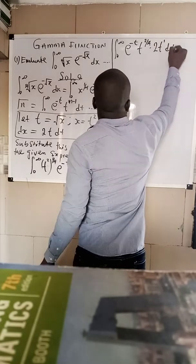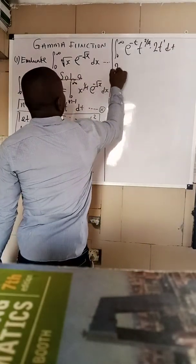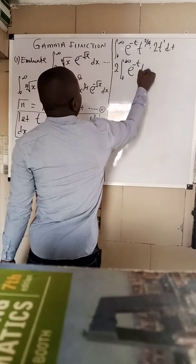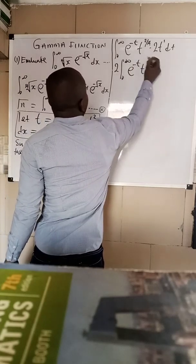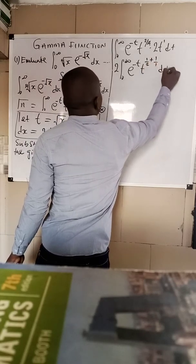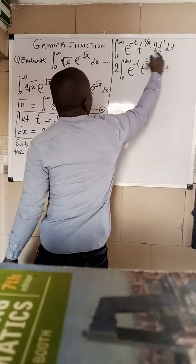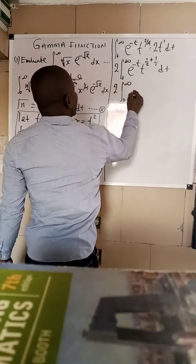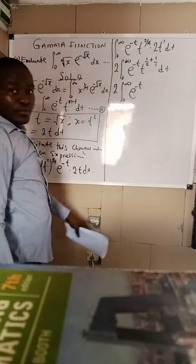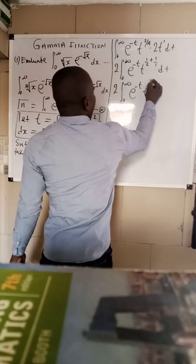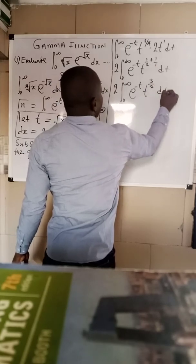This gives us 2 times integral from zero to infinity of exponential minus t times t raised to the power 2 over 4, plus 2t raised to the power 1, dt. Moving the constant outside, we get 2 integral zero to infinity of exponential minus t times t raised to the power 3 over 2 dt.